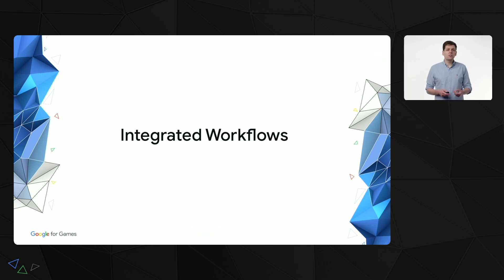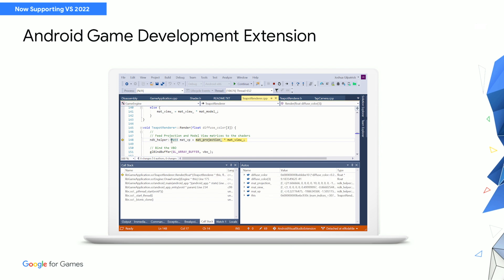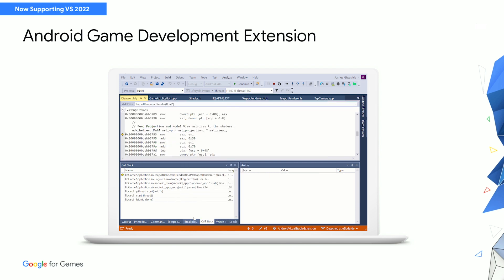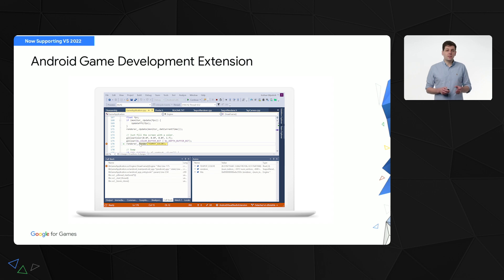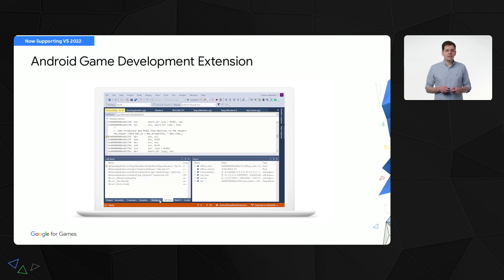Let's start with integrated workflows, where the Android Game Development Extension has some rather exciting new updates. For those not as familiar with it, it is a Microsoft Visual Studio extension for developers of C++ games and game engines. It allows developers to use existing Visual Studio workflows to create Android games. The new version we're releasing today adds support for Visual Studio 2022 and enhancements to make debugging Java and the Java native interface even easier.